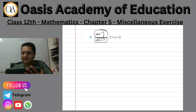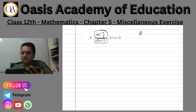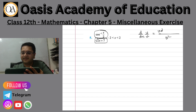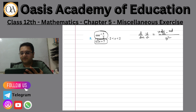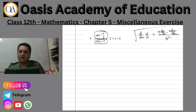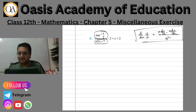What is differentiation of u upon v? So first we do v, and then we keep v constant. Then u on dx, dv — that is the quotient rule formula. That's the concept. Do you know the differentiation of cos x?